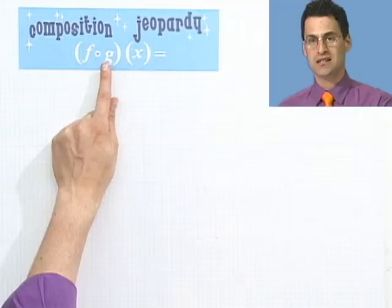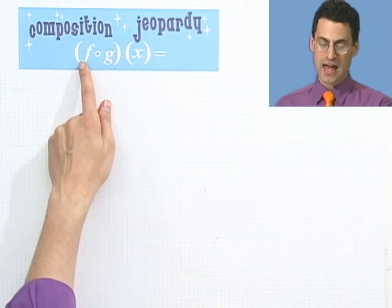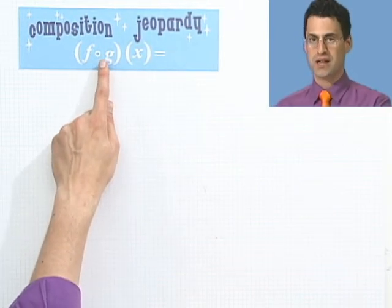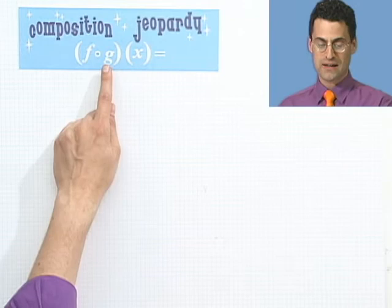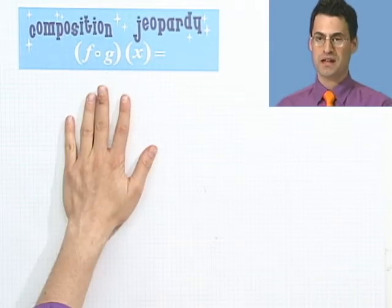So here's the deal. I'm going to give you the answer, and it's your responsibility to tell me what the function g is and what the function f is, so that the answer we give you is going to be f composed with g. So remember, we want g and f so that the composition ends up being the answer we show you.